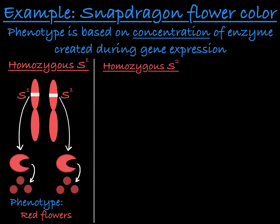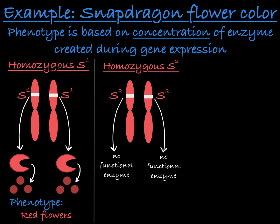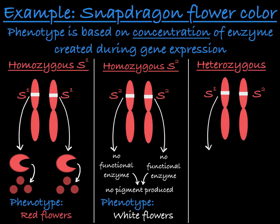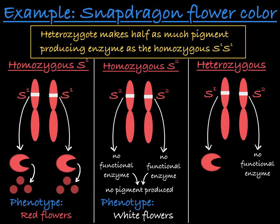Alternatively, a snapdragon homozygous for the S2 allele will only produce non-functional enzyme and will not be able to produce any red pigment, meaning its flowers will be white. A heterozygote has one allele encoding functioning red pigment-producing enzyme and one allele encoding the non-functional enzyme. So this heterozygote has half the amount of functional pigment-producing enzyme. As a result, less of the red pigment is produced, leading to a lighter pink phenotype.